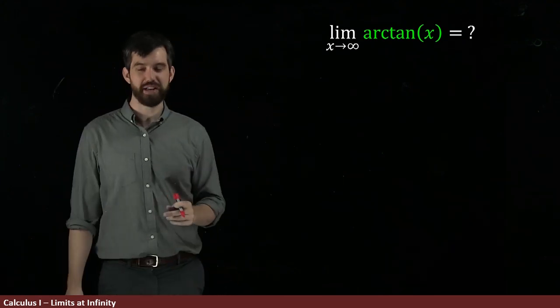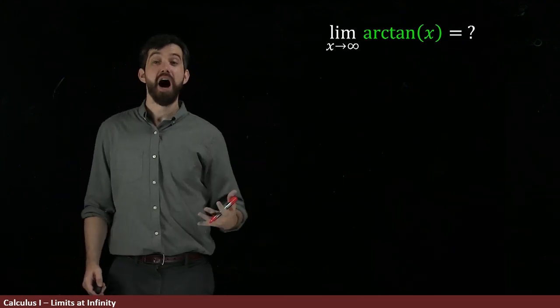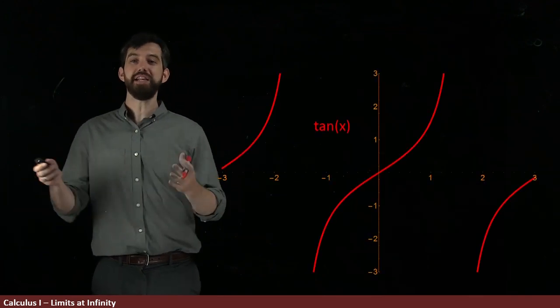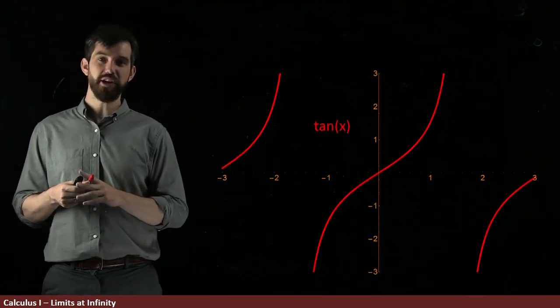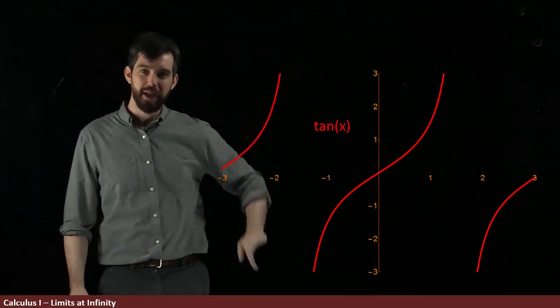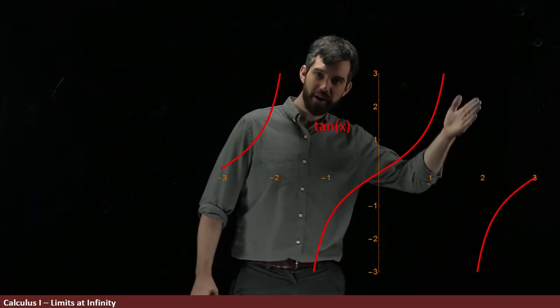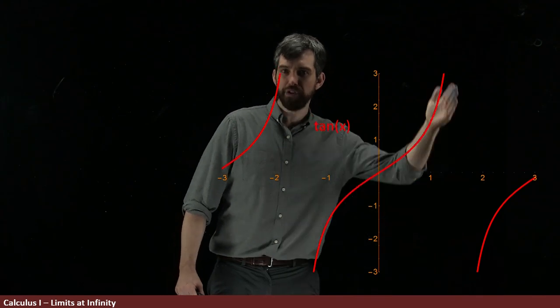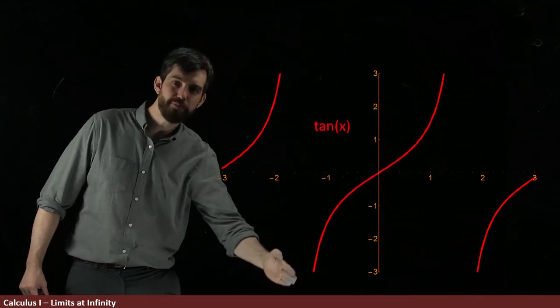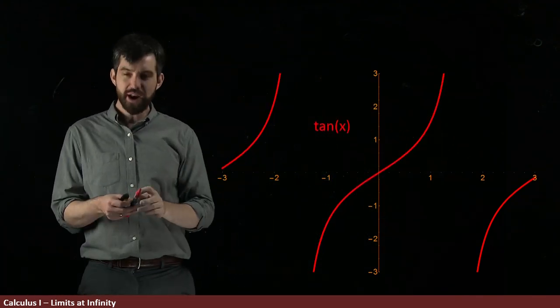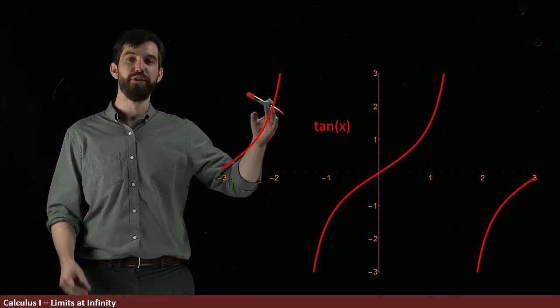So let's look at arctangent of x first. And before we do arctan, I'll remind you of what the graph just of tangent was. So here's the graph of tangent. It goes up and it keeps on having this sort of periodic behavior where at plus pi over 2 or minus pi over 2 what you get are these asymptotes, these vertical asymptotes.